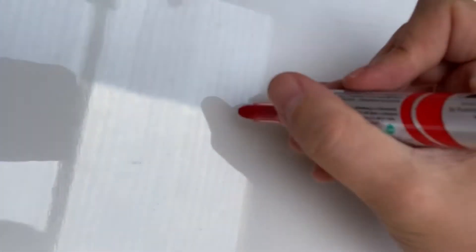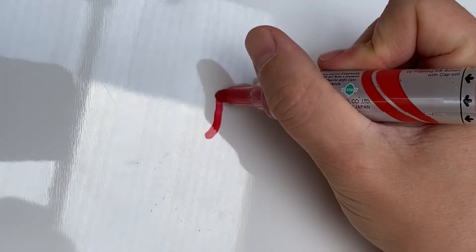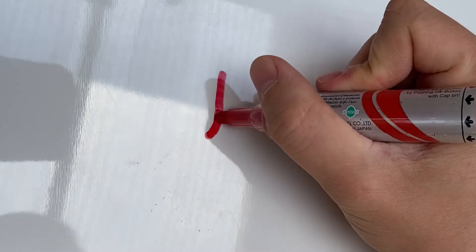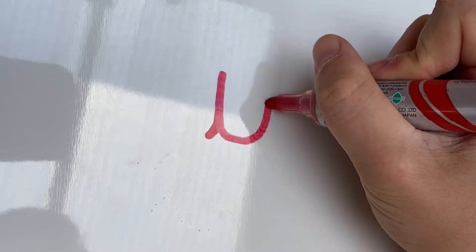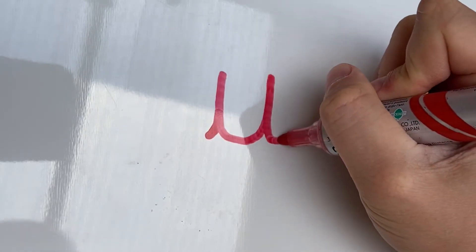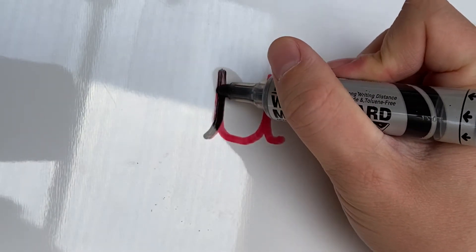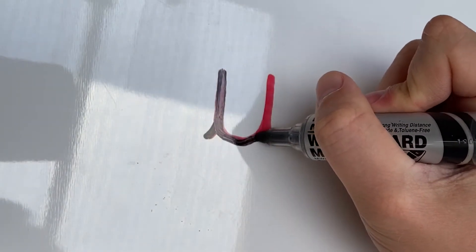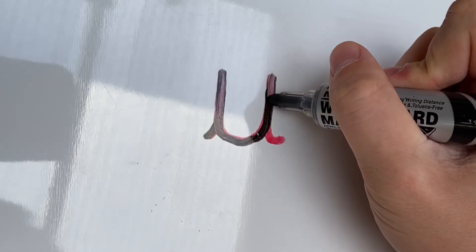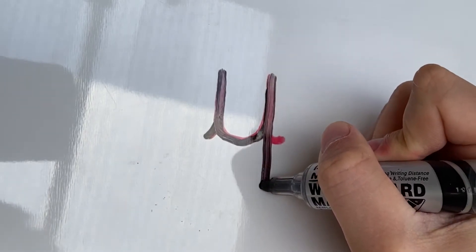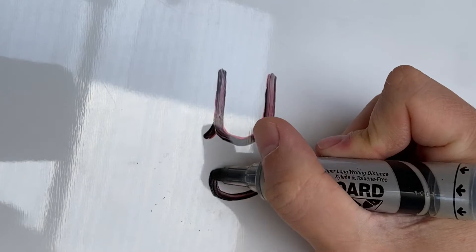Let's start with the letter U which we did in our last session. So we go up, down and round, up, down and hook. For the letter Y it's quite similar. We go up, down and round, up, down and under, loop, hook.